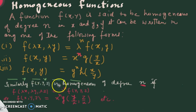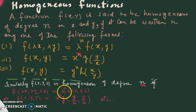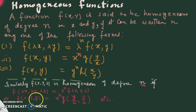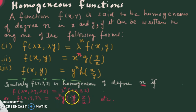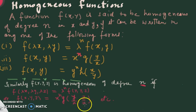For three variables: f(x,y,z) is homogeneous of degree n if f(λx, λy, λz) = λⁿ·f(x,y,z). Equivalently, factoring out xⁿ gives a function where all y terms become y/x and all z terms become z/x. If every term can be expressed as y/x and z/x after factoring, we are dealing with a homogeneous function.